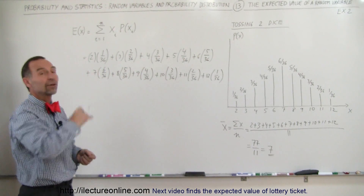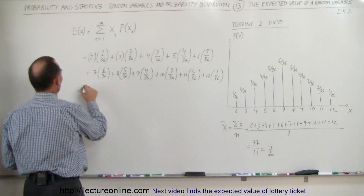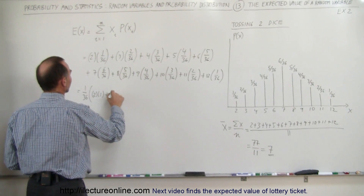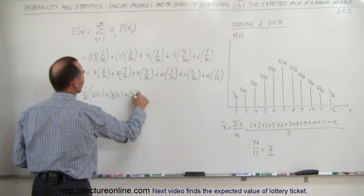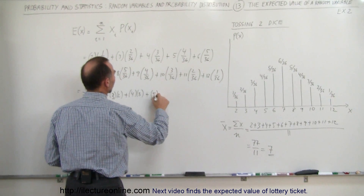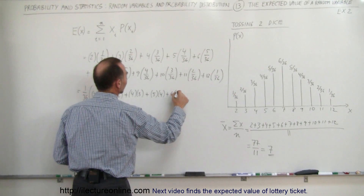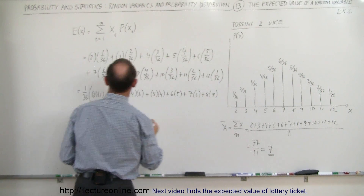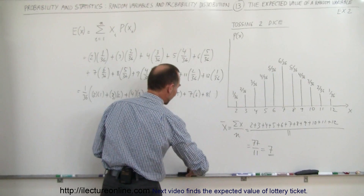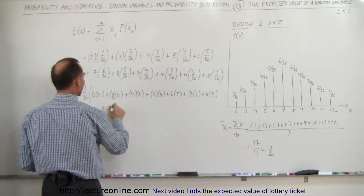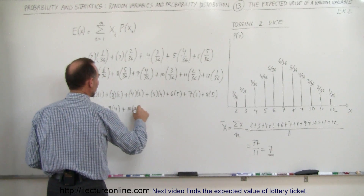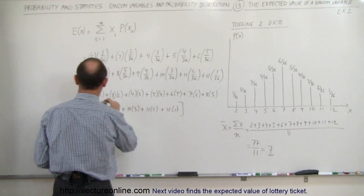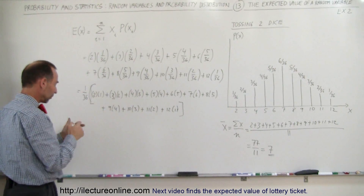Now notice we could factor out 1 out of 36. So that simply becomes 1 out of 36 times: 2 times 1, plus 3 times 2, plus 4 times 3, plus 5 times 4, plus 6 times 5, plus 7 times 6, plus 8 times 5, plus 9 times 4, plus 10 times 3, plus 11 times 2, plus 12 times 1 — all in brackets, multiplied by 1 out of 36.